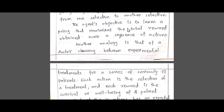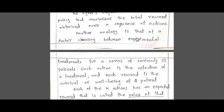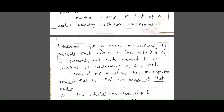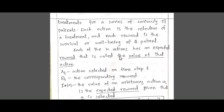The agent's objective is to learn a policy that maximizes the total rewards obtained over a sequence of actions — meaning the agent prepares a plan or strategy to increase or maximize cumulative rewards. Another analogy is that of doctors choosing between experimental treatments for seriously ill patients. A doctor may choose an action on how to treat patients who are very seriously ill, and each action receives a reward like patient survives or else the patient may die. Each of the K actions has an expected reward, called the value of the action.